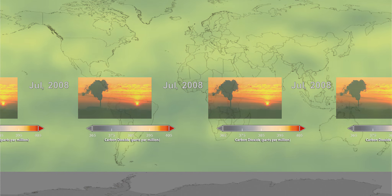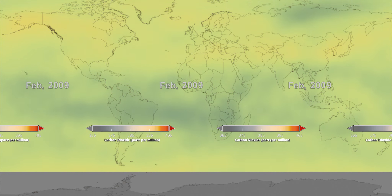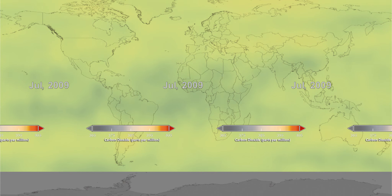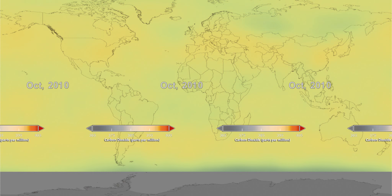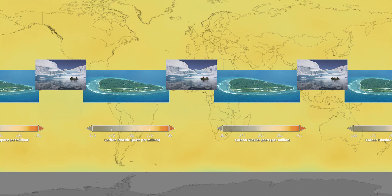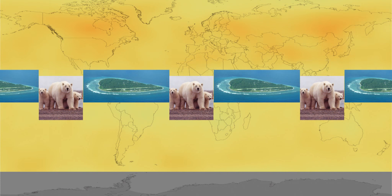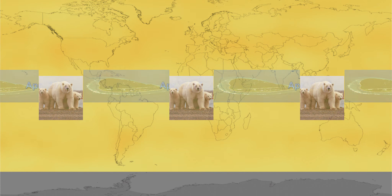Why does it matter that CO2 is increasing? Even though greenhouse gases contribute to making our Earth habitable, too much in the way of greenhouse gases could lead to a level of warming that could have an array of troublesome consequences, including sea level rise and extinctions of species unable to adapt to the changes.